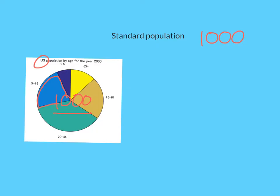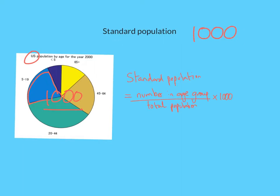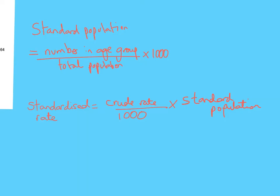We have a formula to calculate the number of people in each age group within the standard population: it is the number in the age group divided by the total population, multiplied by 1,000. The fraction represents the proportion of the pie, and multiplying by 1,000 scales it to the hypothetical population. We also have a formula for the standardised rate of change — crude rate divided by 1,000, multiplied by the standard population — which allows realistic comparisons to be made between populations. You can calculate standardised birth, death, or unemployment rates this way.